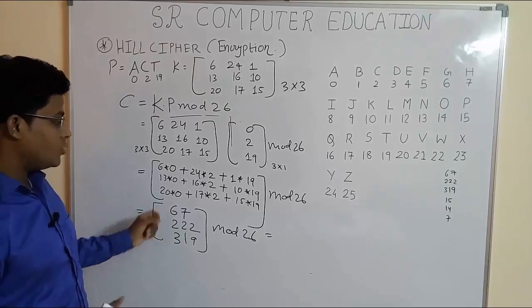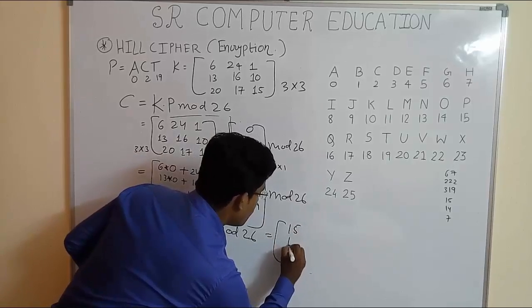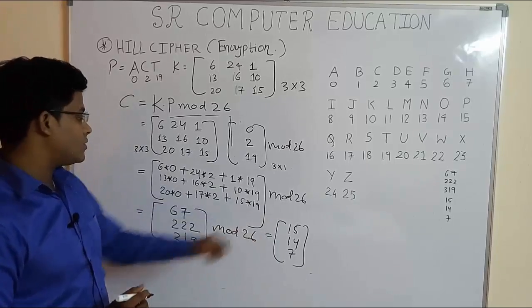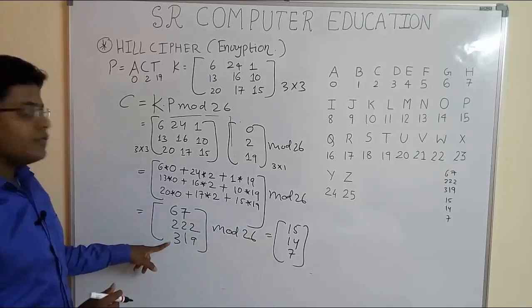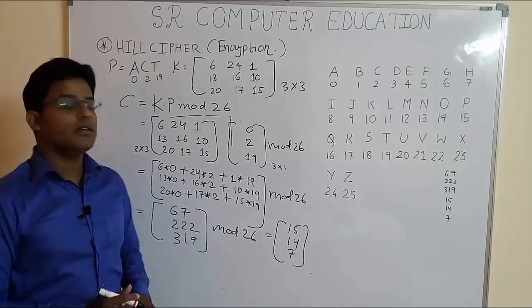When you find 319 mod 26 it will take some time, but using a calculator you can get the answer within seconds. After doing the mod operation you get 15, 14, and 7. When you divide 67 by 26 the remainder is 15, for 222 by 26 it's 14, and for 319 by 26 it's 7.